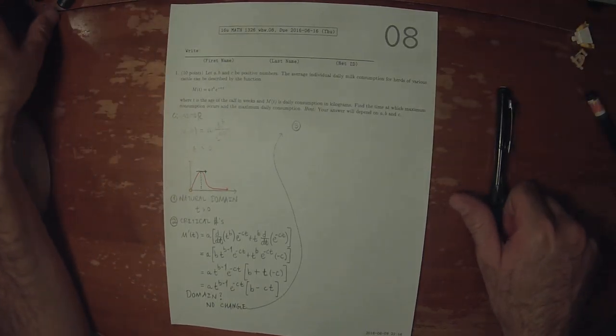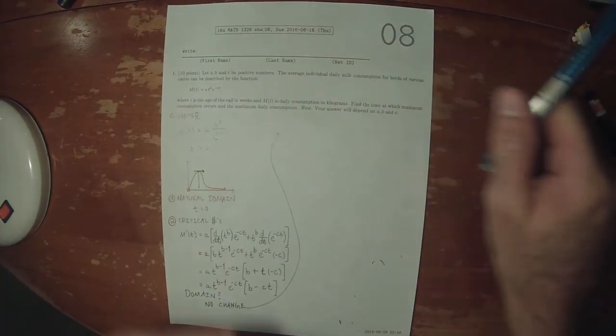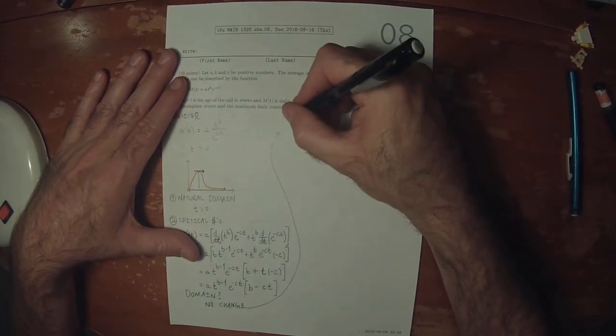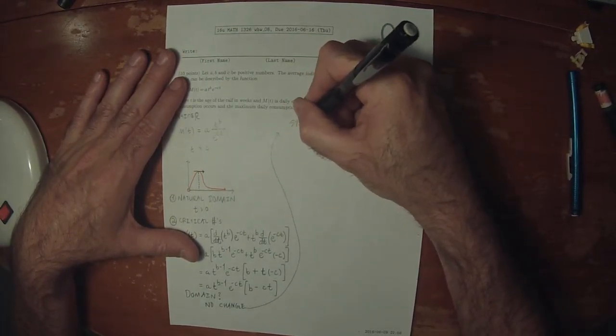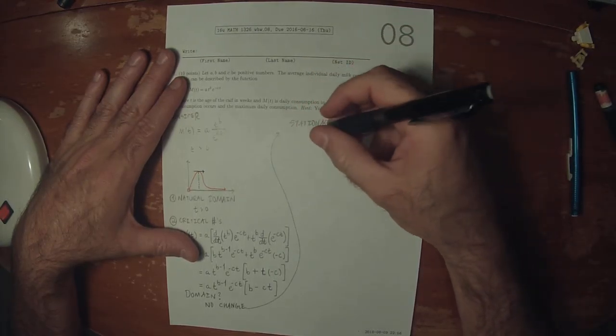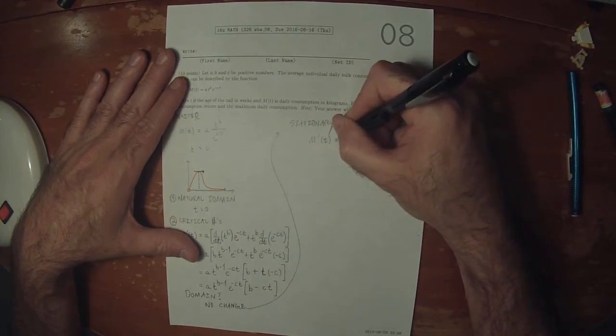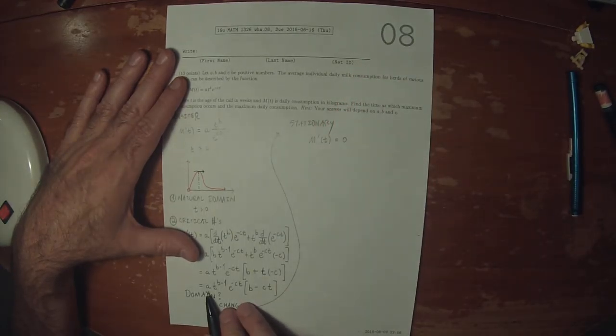Now, not step 3 yet. Now we're looking for the stationary points, that is to say where the derivative is zero. Well, A is positive so it's never zero.